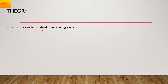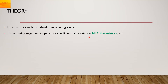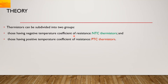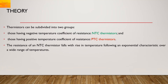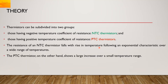Thermistors can be subdivided into two groups. First, NTC thermistors having a negative temperature coefficient of resistance. Second, PTC thermistors having a positive temperature coefficient of resistance. In NTC, with the rise in temperature there is a fall in resistance. In the case of PTCs, as you increase the temperature the resistance also increases.